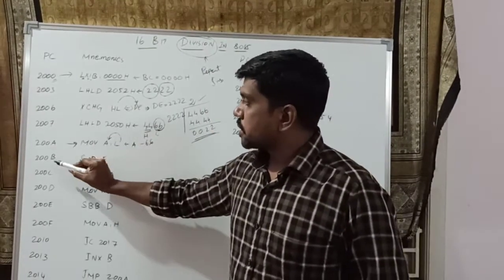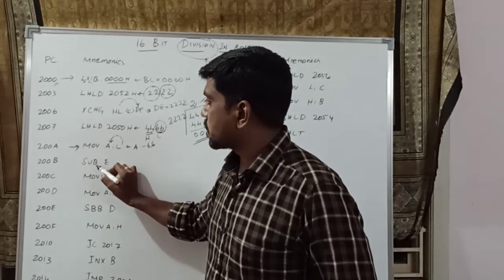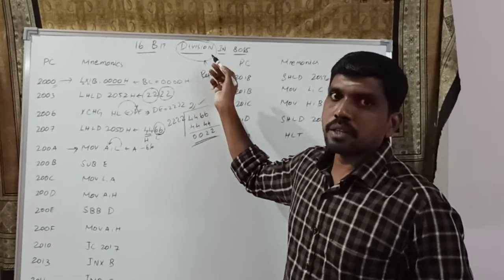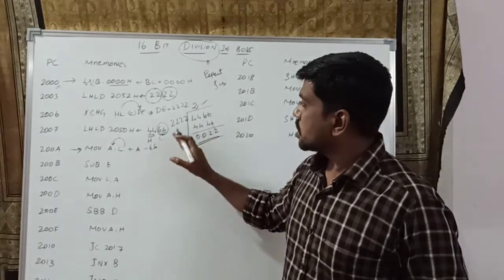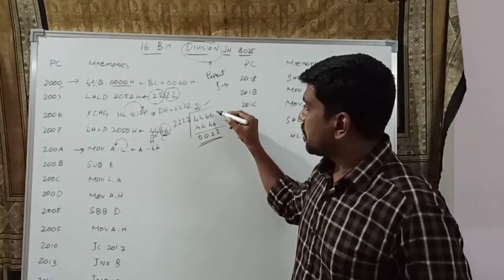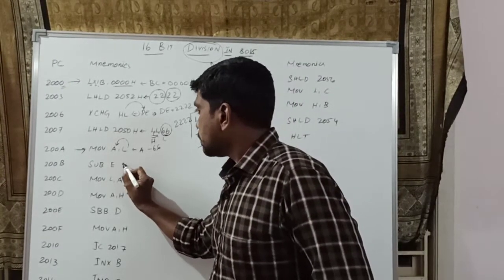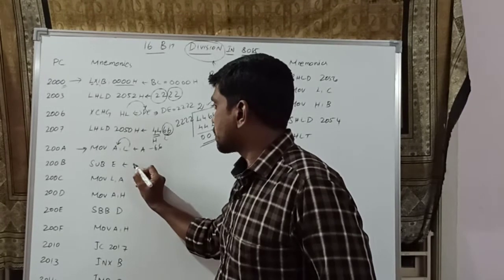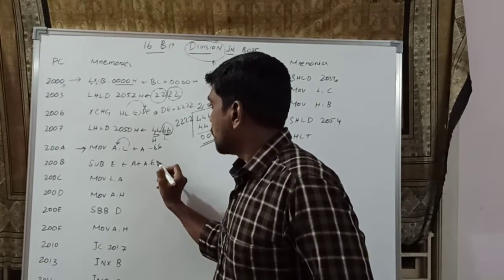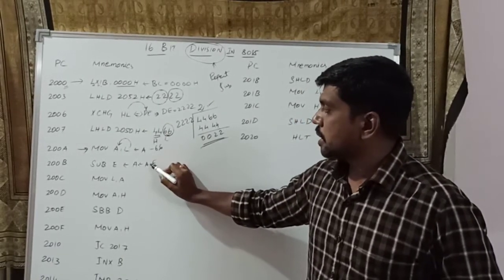The next memory location is 200BH. In this memory location, the instruction is SUB E — subtract E. In division function, there is no 16-bit direct division instruction, so you first split the 16-bit value into two 8-bit values. On 8-bit values only, you apply the subtraction function. So after execution of SUB E, the result is stored in the accumulator: A minus E.